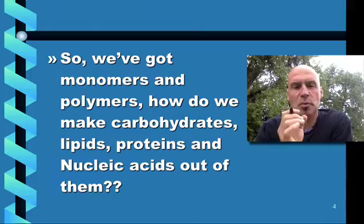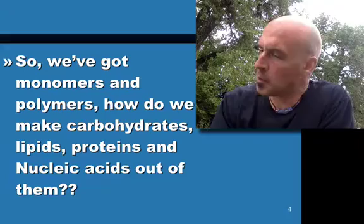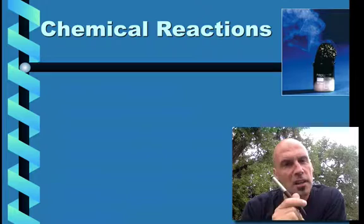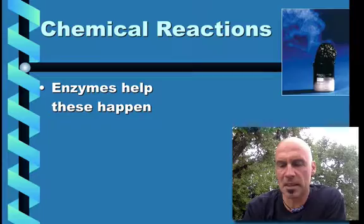How do we make carbohydrates, lipids, proteins, and nucleic acids out of them? So we've got the single blocks in the monomers and we've got the multi-blocks in the polymers. How do we take those polymers and make really fancy things like carbohydrates, lipids, proteins, and nucleic acids out of those? Let's find out. All right, chemical reactions is what you need. So enzymes are what helps make these happen.